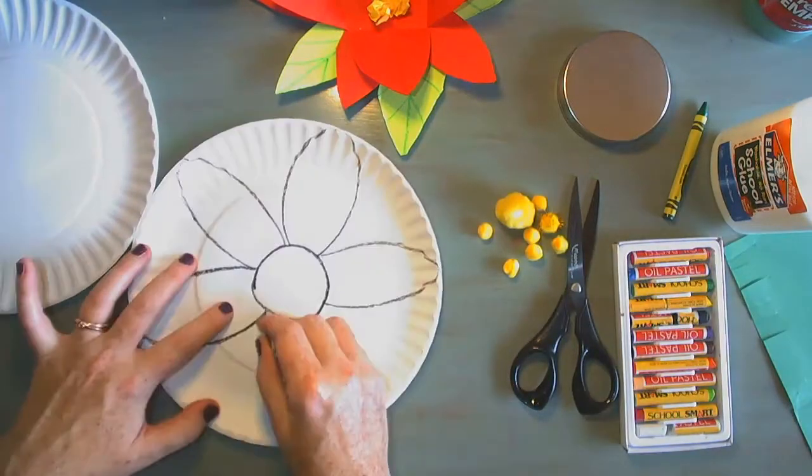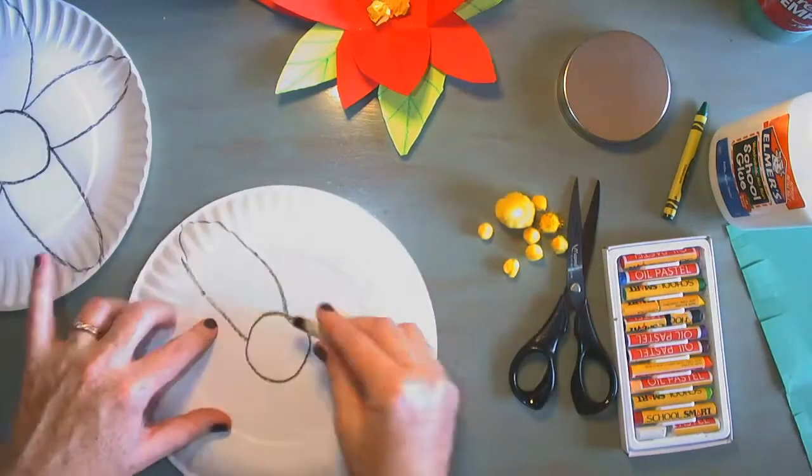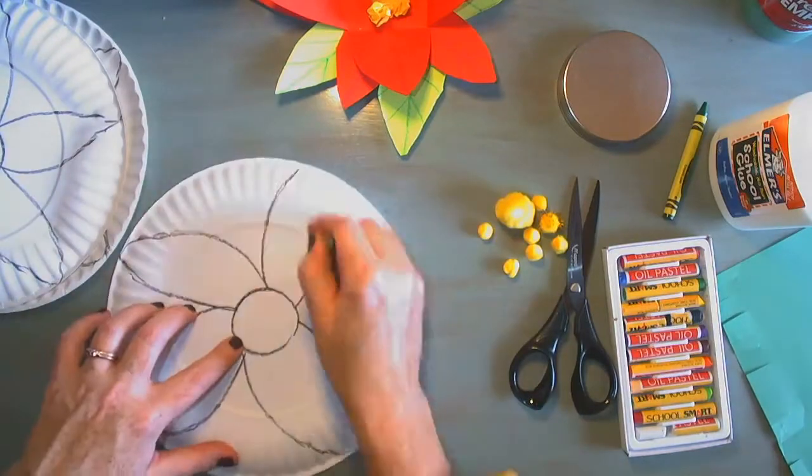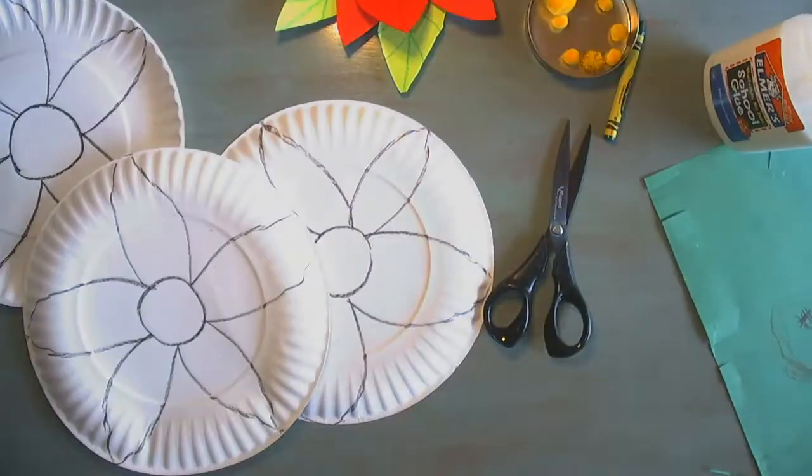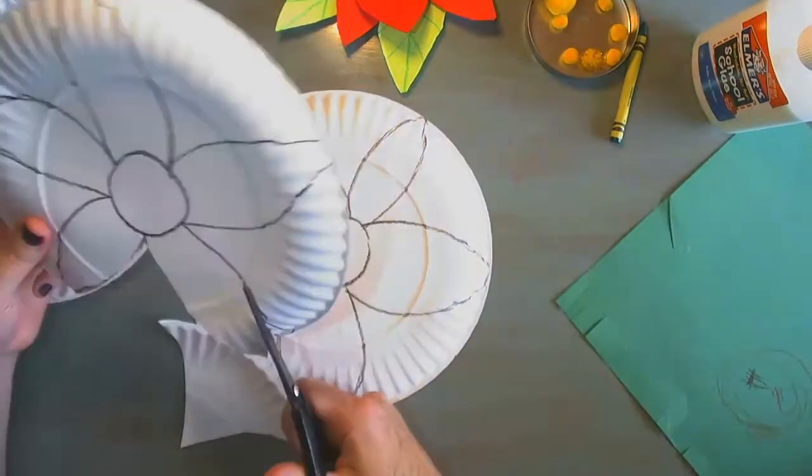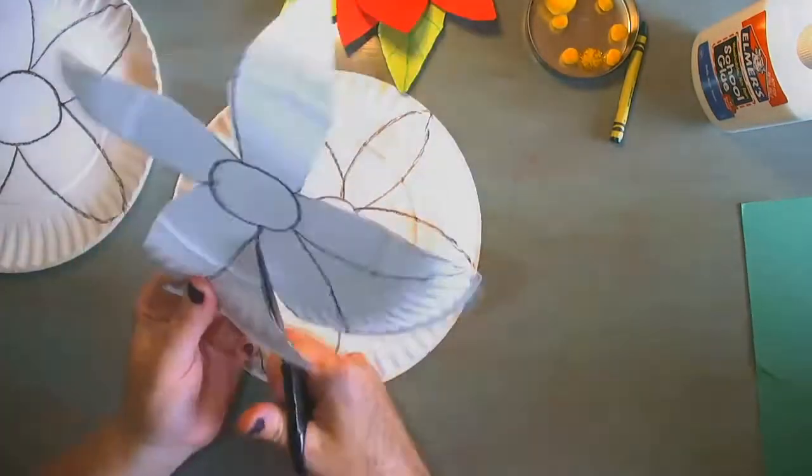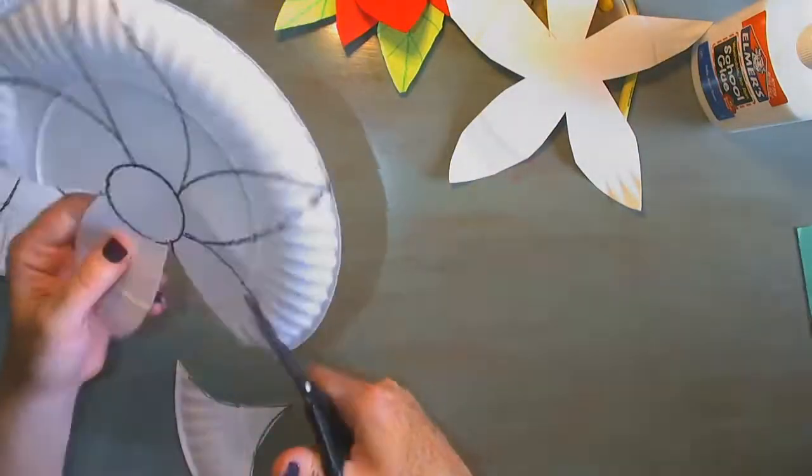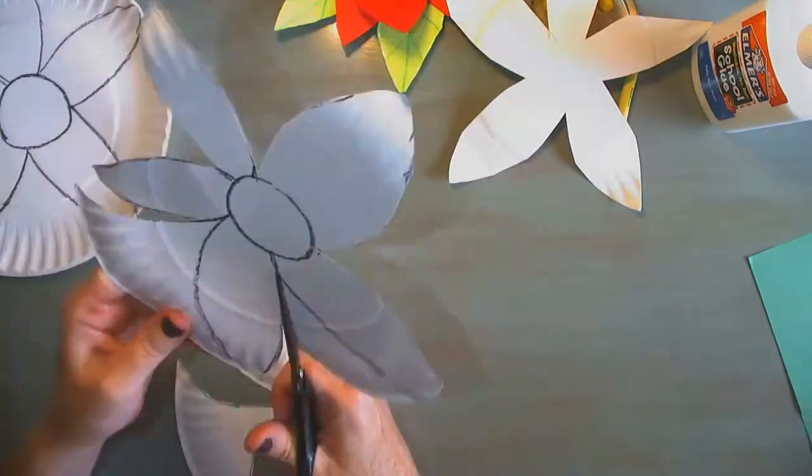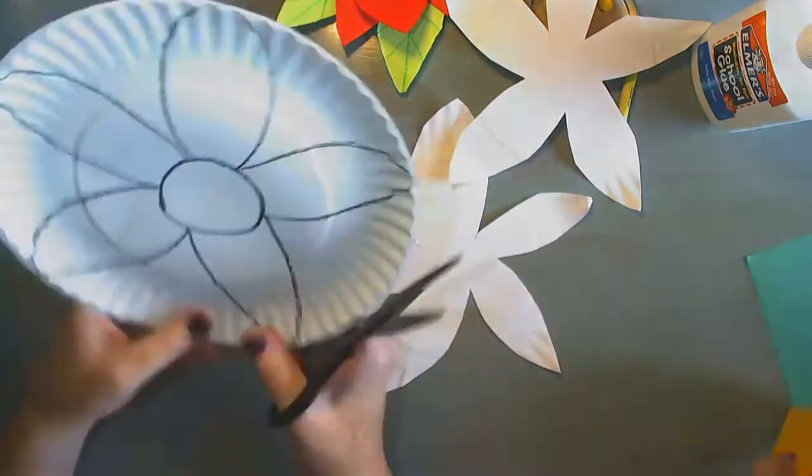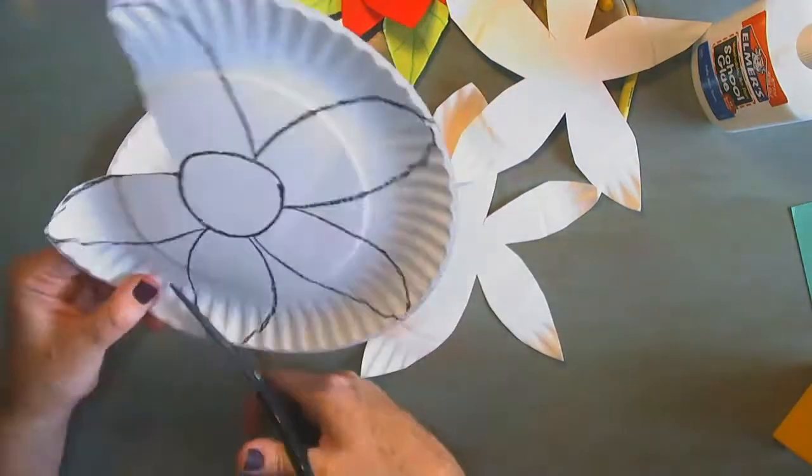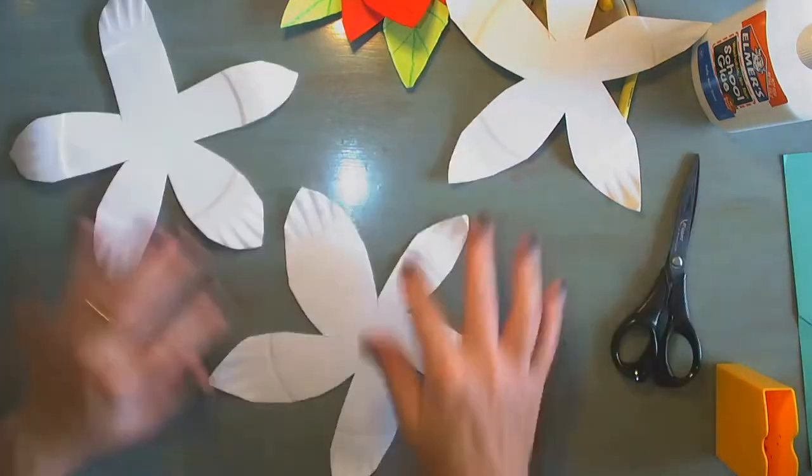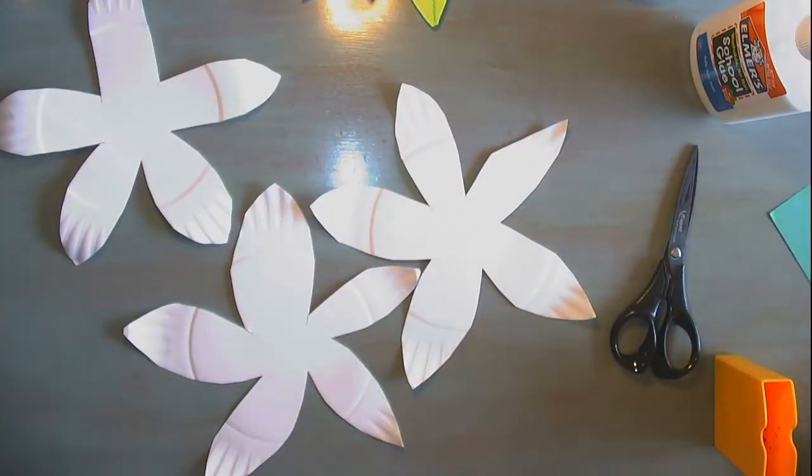Now if you're using paper plates you're really repeating the same process. You draw a circle. You draw the flower petals all the way to the edge of the plate and you're going to cut them out. Again start on the edge of the paper and cut inward on both sides. When you're all finished you'll have three.